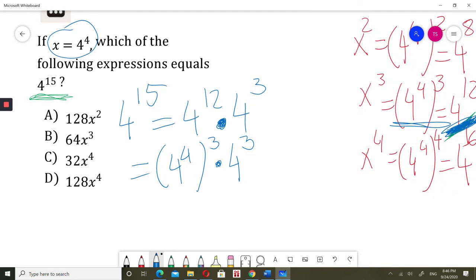Then, 4 to the power of 4 is x. I will replace this by x. This will be x to the power of 3 times, what's 4 to the power of 3? 4 times 4, 16. 16 times 4. 4 times 4 times 4. 16 times 4, 64. So, x cubed times 64, I will write it as 64x cubed.